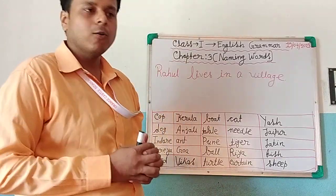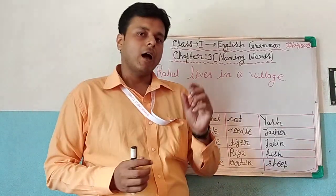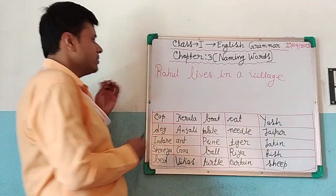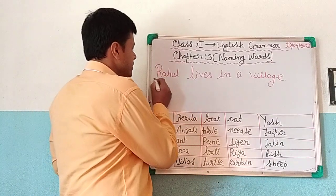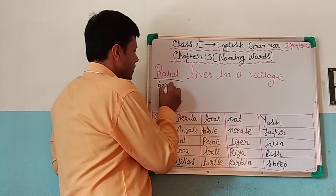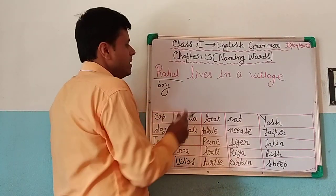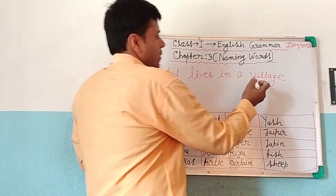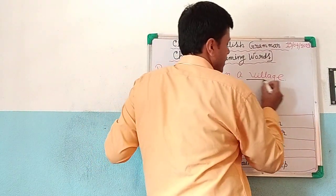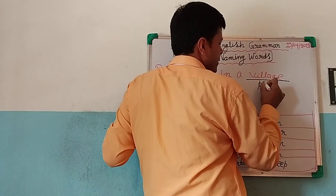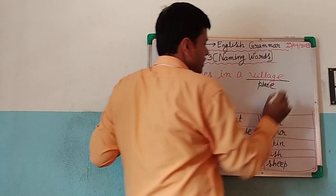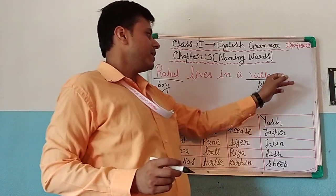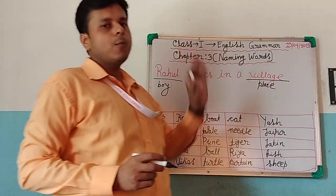Rahul — tell me, Rahul is the name of a boy. So, Rahul is the name of a boy. We will learn about action words in the next class. Village is also the name of a place. So, Rahul is the name of a boy, and village is the name of a place.